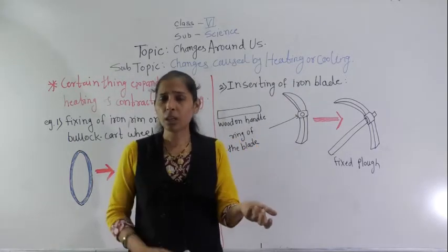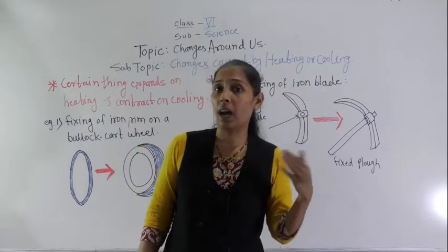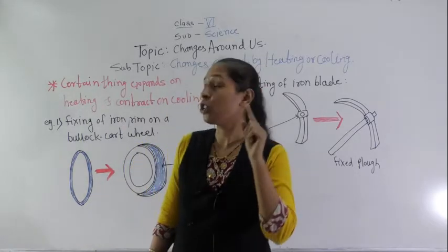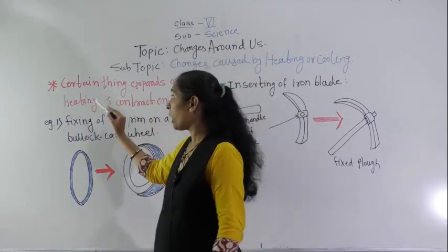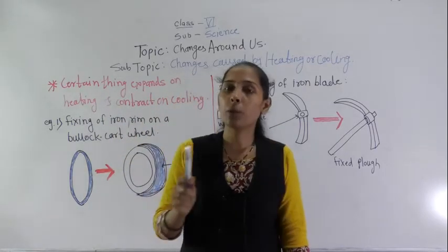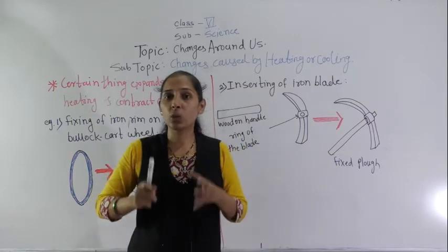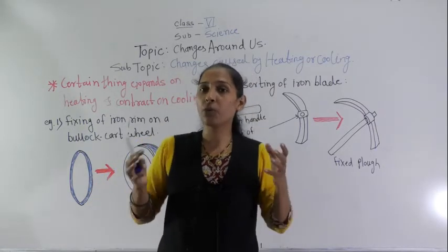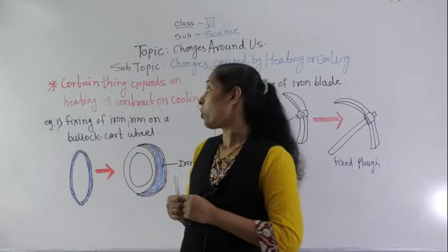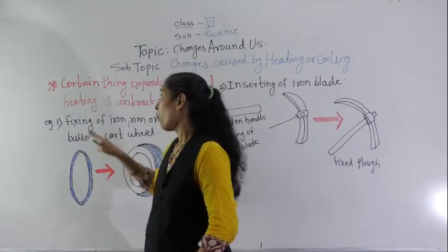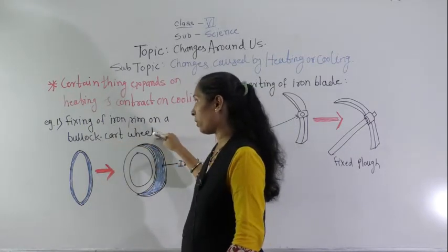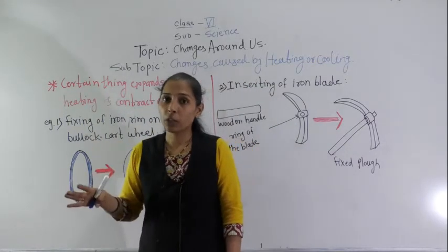There are certain metals such as iron and aluminium that expand on heating and contract on cooling. This property of metals is used in different ways. Let's discuss one example: fixing of an iron rim on a bullock cart wheel.